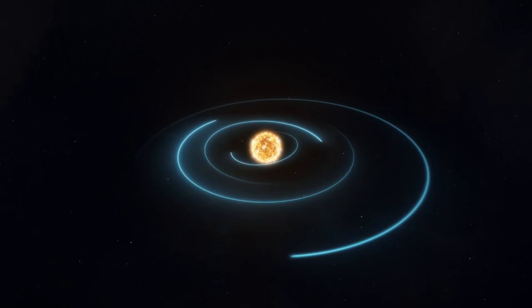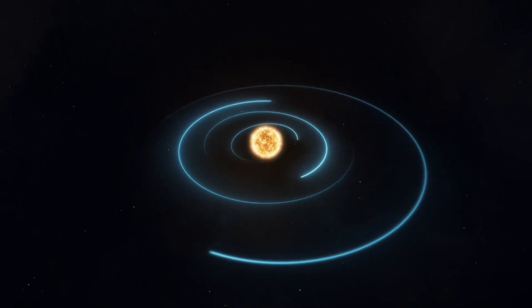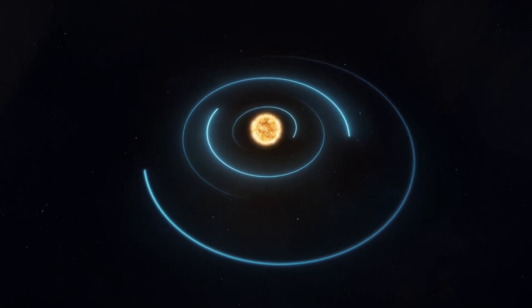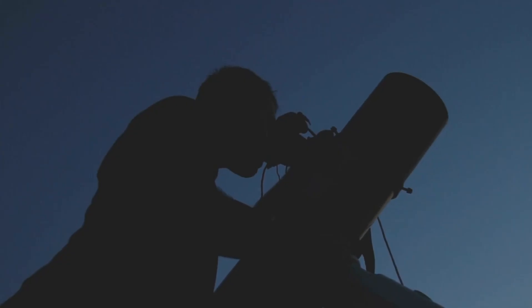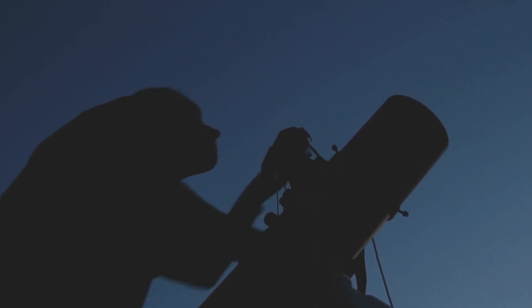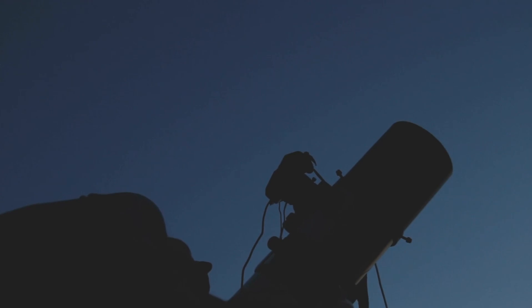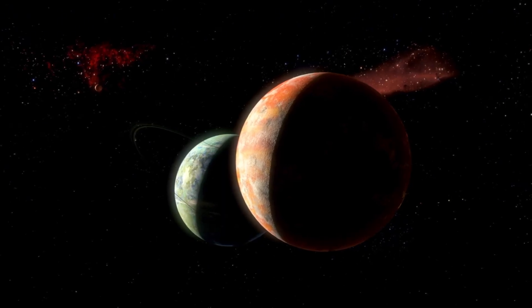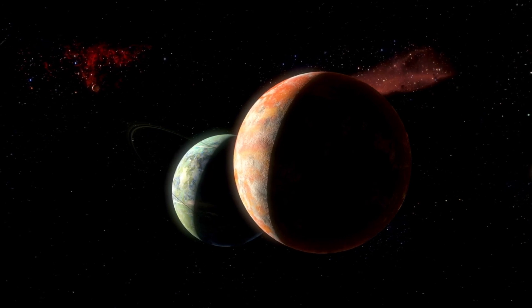The habitable zone is significant. Proxima b is a planet that surrounds Proxima Centauri, its faint red star, at a distance of just around 4.6 million miles. Due to its proximity, the planet has severe environmental difficulties. The star's powerful solar winds, which have the potential to gradually remove the atmosphere, are one of the main issues.